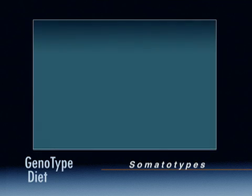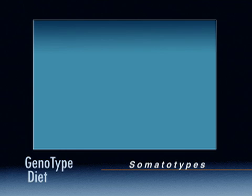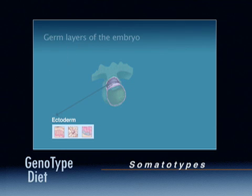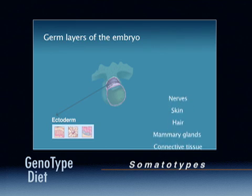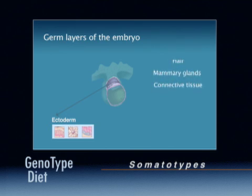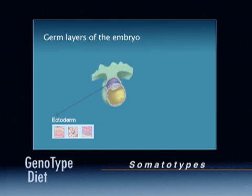Body types are composed of different ratios of three types of embryonic tissue. These three basic tissue types comprise the germ layers of the embryo. Ectoderm tissue forms the nervous system, skin, hair, mammary glands, and pigment and connective tissue.